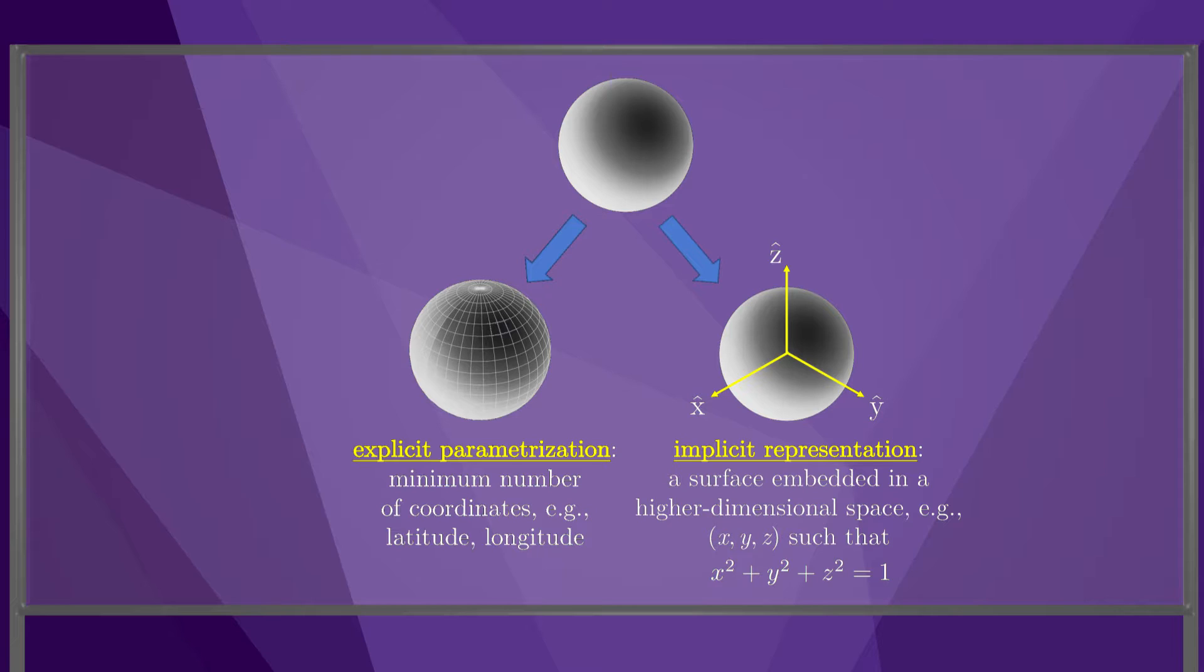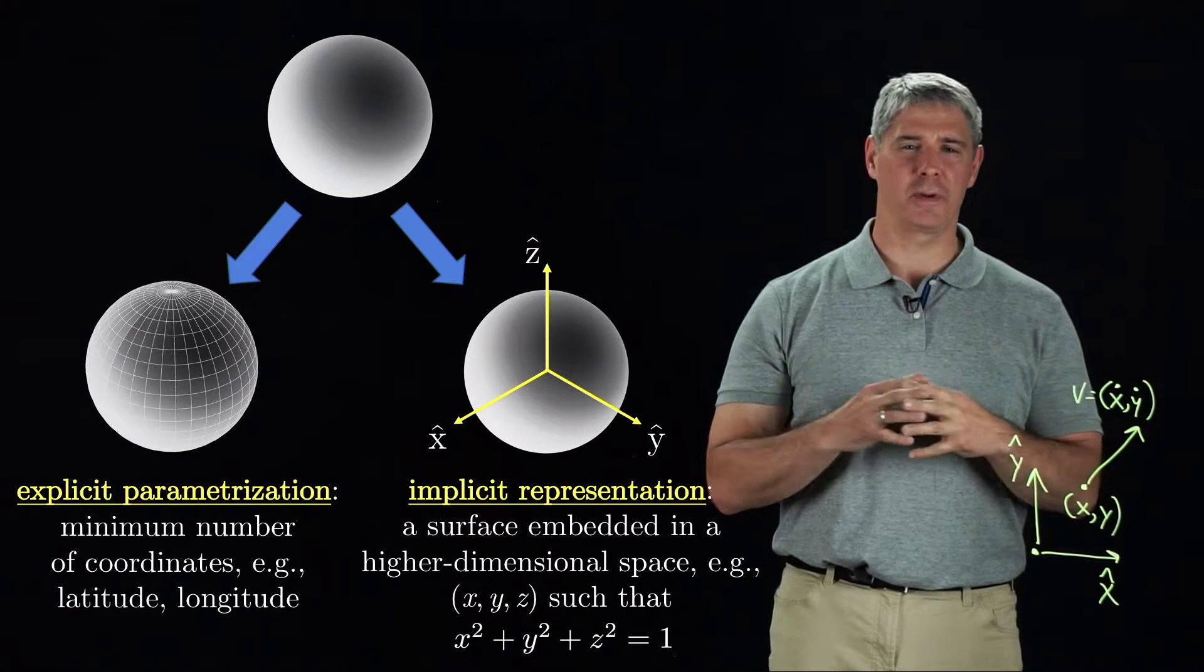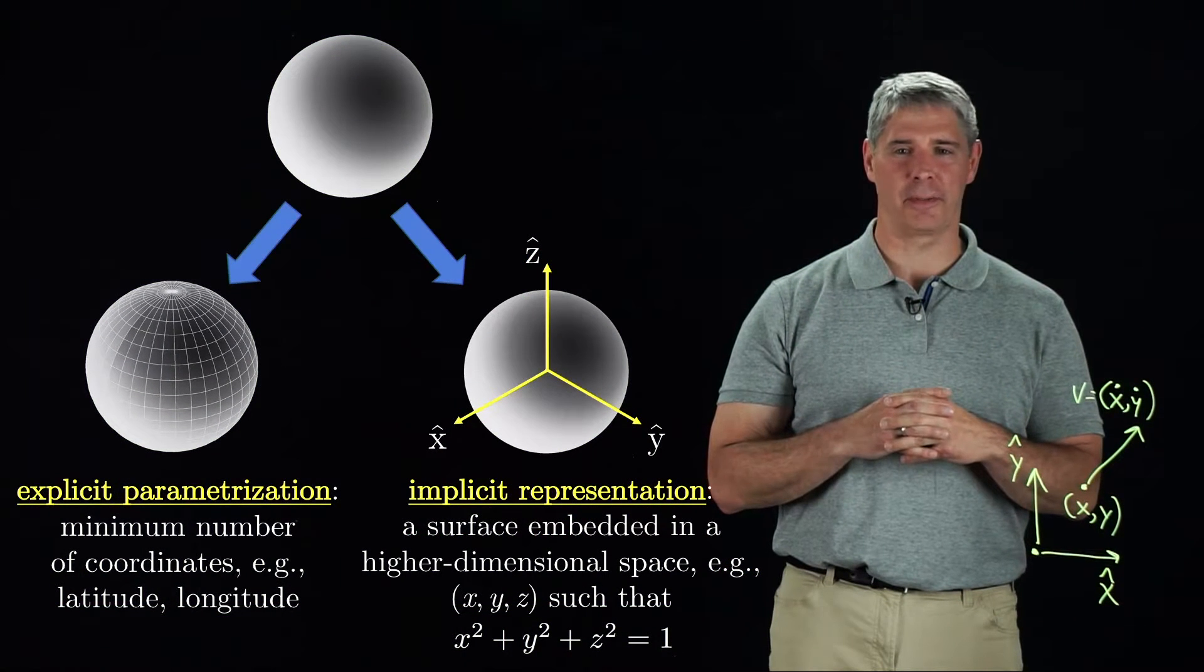As we learned before, one constraint on three coordinates implies two degrees of freedom, that is, a two-dimensional C space. So how do we choose between explicit and implicit representations?